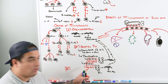Lymphoblasts can also deposit into the testes, causing testicular enlargement — an unfortunate finding in children. This is less common than meningeal leukemia but must be recognized. Lymphadenopathy, meningeal involvement, and testicular involvement are key features that help differentiate ALL from AML.